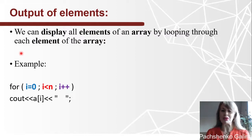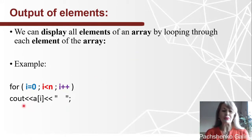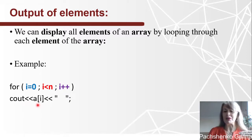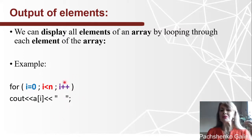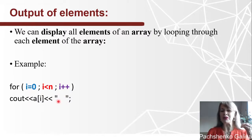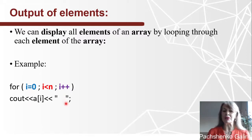Output of elements of the array. We can display all elements of the array by looping through each element. For example, we use the function cout to display each element on the screen using a for loop, with initial value, condition, and increment — iterating a number of times equal to the number of elements. Note: I put a blank between double quotes, so we'll see each number followed by a space.